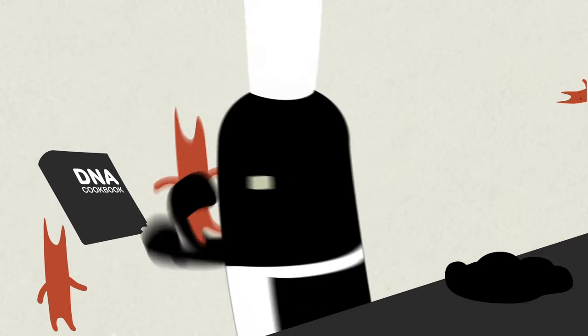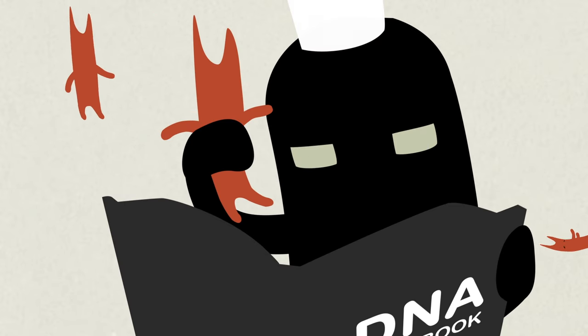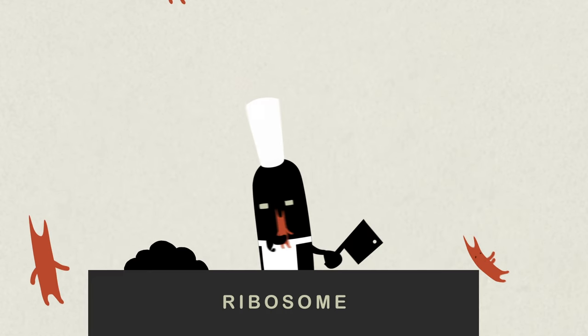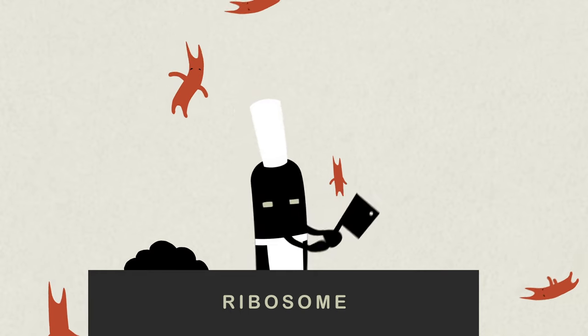When an order comes in, the chef looks to the cookbook, your DNA, for the recipe. She then transcribes that message onto a piece of paper called RNA and brings it back to her countertop, the ribosome.